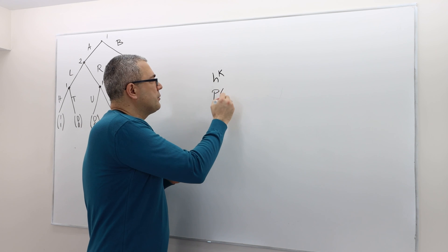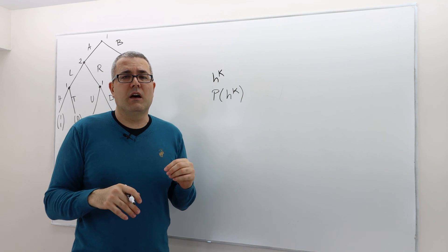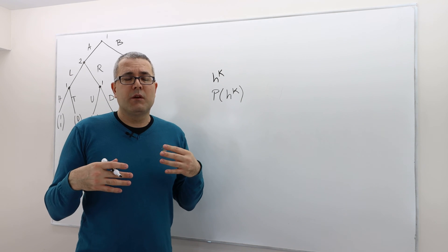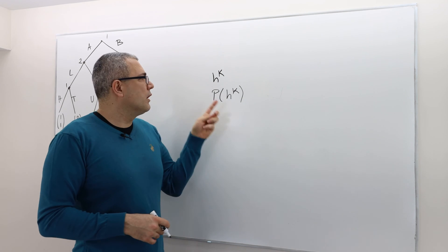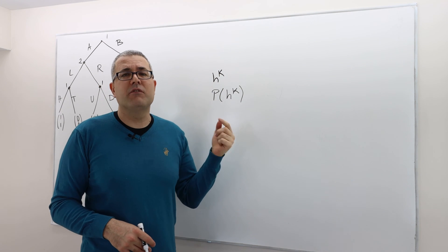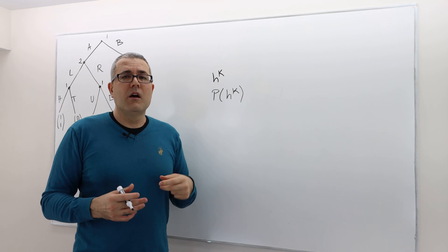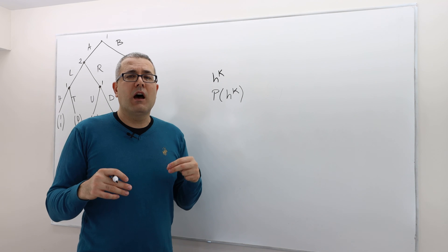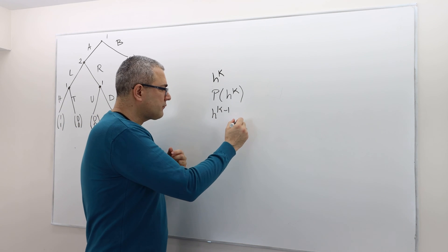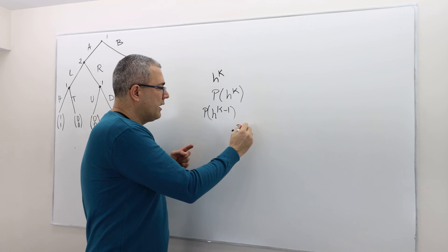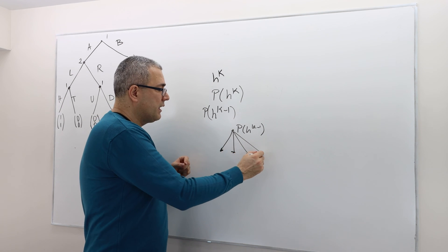Look at the player at that history — P(H_K). This player is going to choose among possibly many actions. What is his payoff-maximizing action? In this subgame, this player is supposed to choose that action. Do this for all histories with length K. Remember this is the longest history, so any other history of the same length also has length K. Once done with histories of length K, move upward to all histories with length K minus 1.